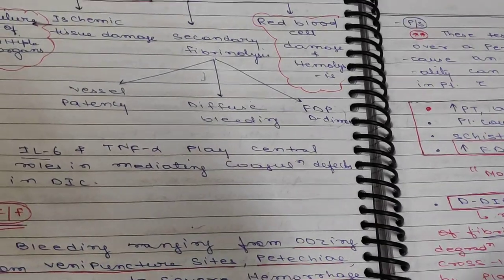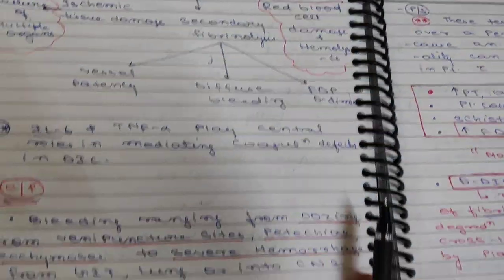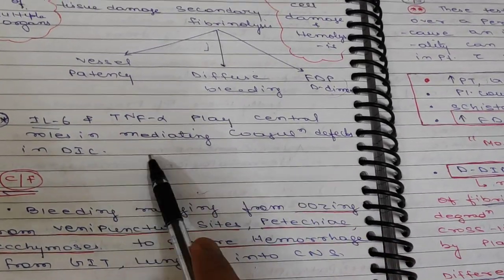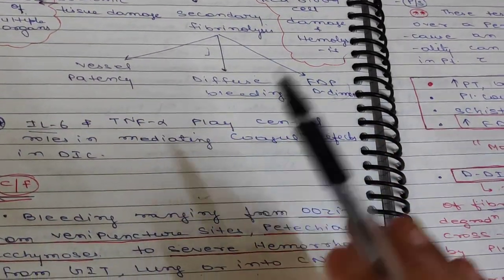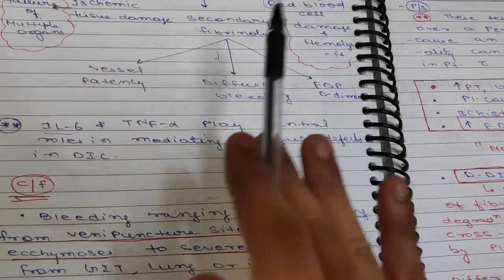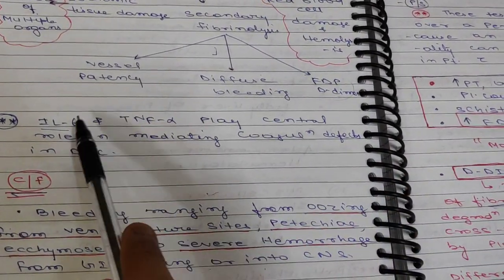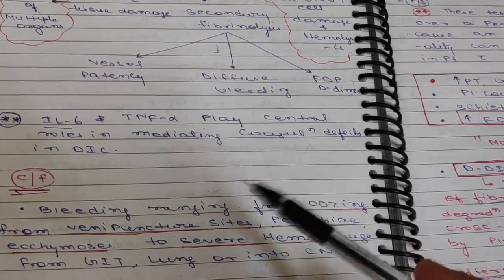Interleukin-6 and TNF-alpha play central roles in mediating coagulation defects in DIC. We will discuss pathophysiology in a different pathology video. We are concentrating mainly on treatment and clinical features because this is a medicine video.